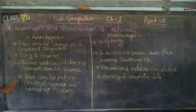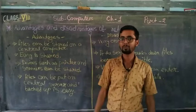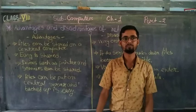Number four: files can be put on the central server and backup is very easy. There is a server room where keeping data and sharing data is very easy, and we can back up the data very quickly from this server room. So these are the advantages of computer networks.